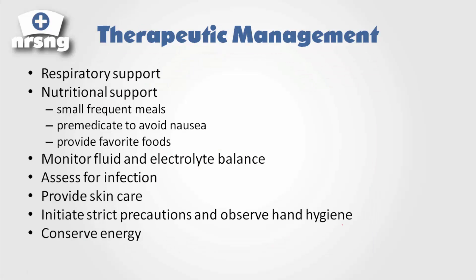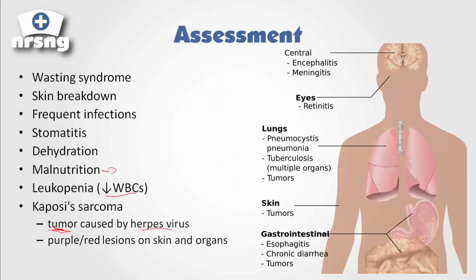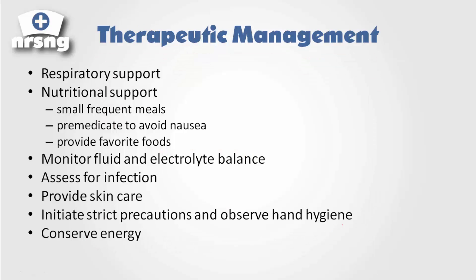How are we going to support these patients? We're dealing with destruction of T4 and the patient becoming much more susceptible to infection. The patient will need respiratory support. Because of wasting symptoms, we need to keep small, frequent meals and pre-medicate the patient before any meals to help prevent nausea and vomiting, so they can take in a little more food and get the nutrients they need.